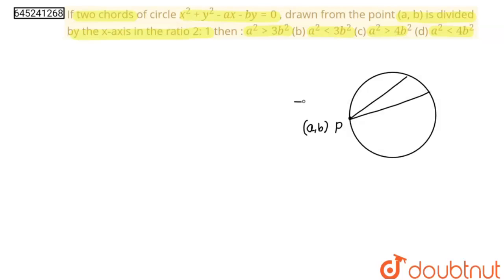And this chord is divided by the x-axis in ratio 2:1. Which of the following relation between a and b is correct?